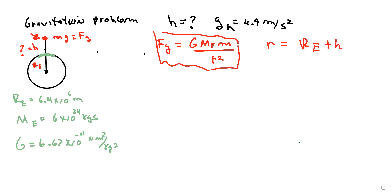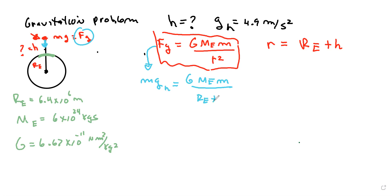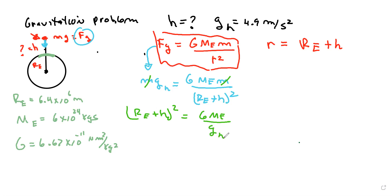So we have that mg at h is going to be — plugging this in — the weight, which is the force pointing inward at distance h over the surface of the Earth. That's G times the mass of the Earth times the mass of the little particle, divided by (R_E plus h) squared. We can cancel the small mass on both sides, giving us (R_E plus h) squared equals G times the mass of the Earth divided by g_h, which we know is 4.9.